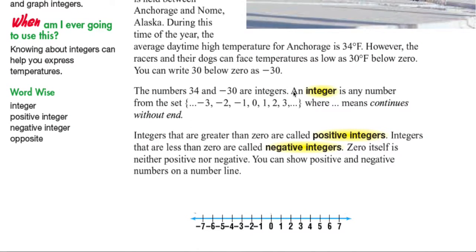So the numbers 34 and negative 30 are integers. An integer is any number from the set of negative 3, negative 2, negative 1, 0, 1, 2, 3, where the three dots mean continues without end. So integers that are greater than zero are called positive integers.